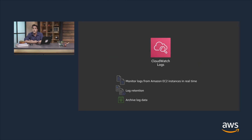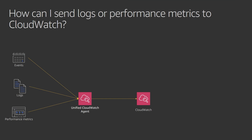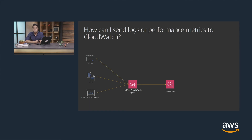You can use Amazon CloudWatch Logs to monitor applications and systems using log data in real time. CloudWatch Logs can track the number of errors in your application logs and send a notification whenever the rate exceeds a threshold you specify. By default, logs are kept indefinitely and never expire, though you can adjust the retention policy between one day and ten years. CloudWatch Logs stores log data in highly durable storage, accessible at any time. To send logs or performance metrics to CloudWatch, one option is the CloudWatch Agent — a Windows service that, based on a configuration file, sends logs, Windows events, or performance metrics to CloudWatch.